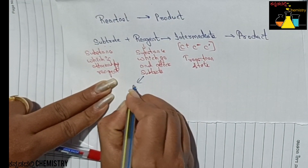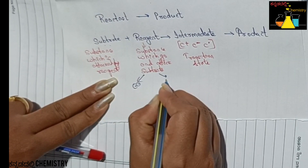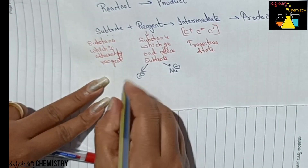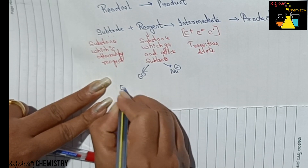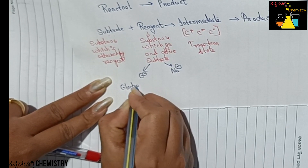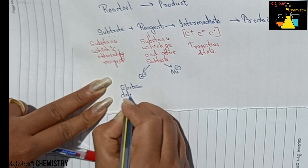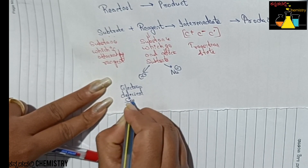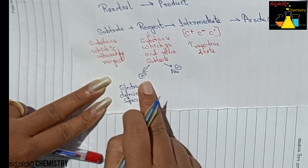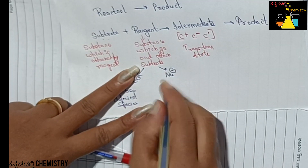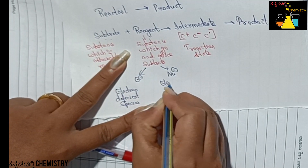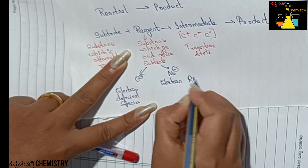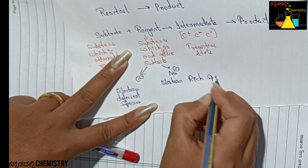This is the electrophile and this is the nucleophile. The electrophile is an electron-deficient species. The nucleophile is an electron-rich species.